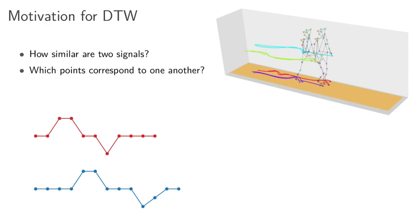More concretely, dynamic time warping is going to help us answer two questions. First, how similar are two signals — and these signals can be of different durations. You'll remember from the moving figures that one basically started moving before the other, and despite the measurements being of different lengths, we might still want to compare them. Second, it helps us figure out which points on one signal correspond to points on the other signal.